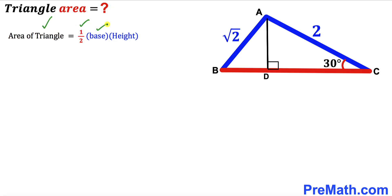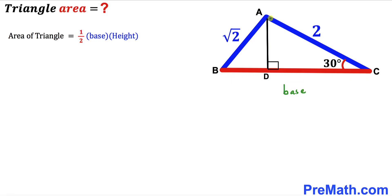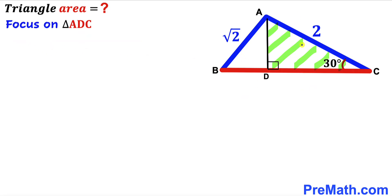Area is always equal to one-half times base times height. In our case, the base of triangle ABC is BC, and the perpendicular AD is the height. So our task is to calculate the height and the base before we can find the area. Let's now focus on right triangle ADC.